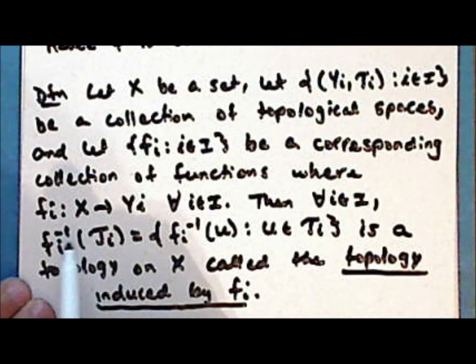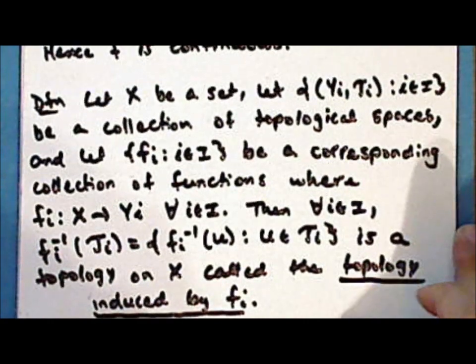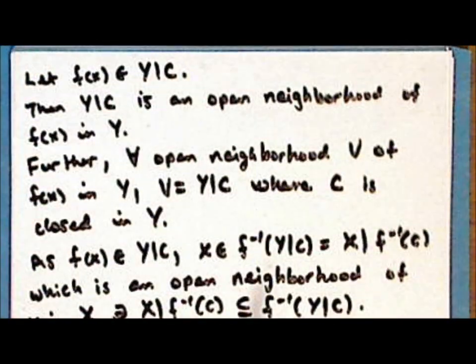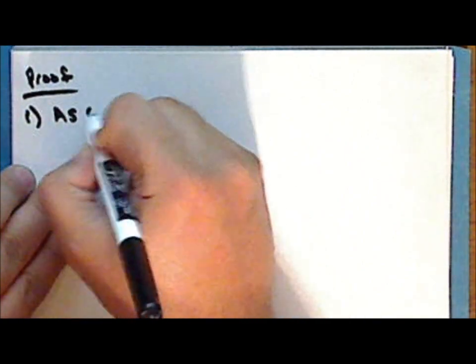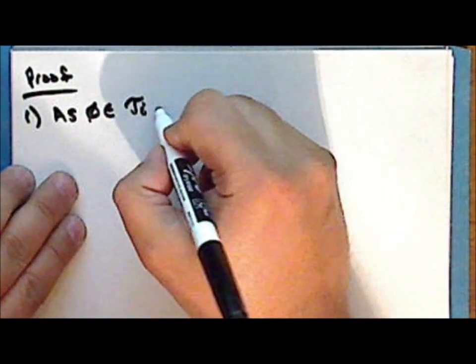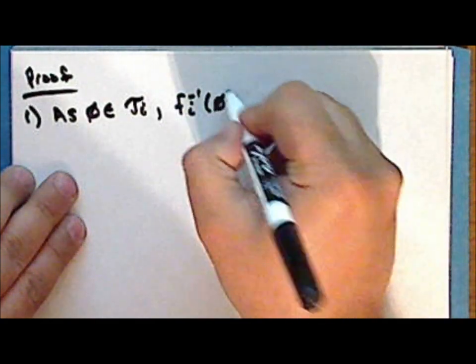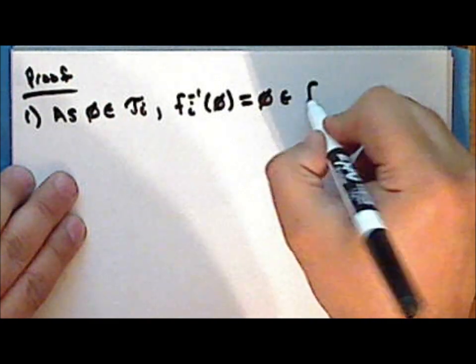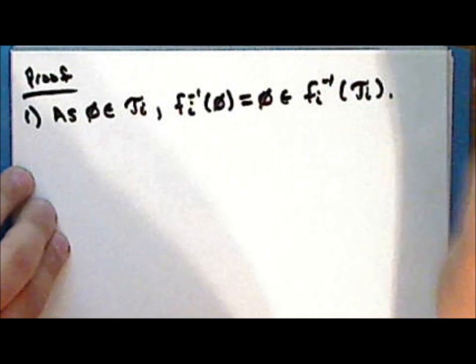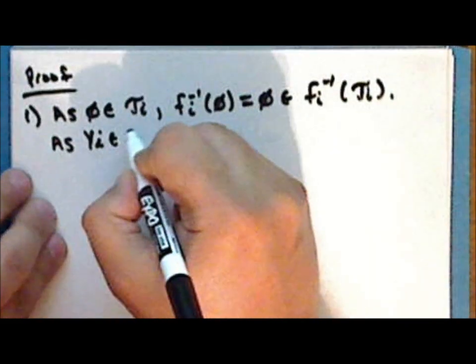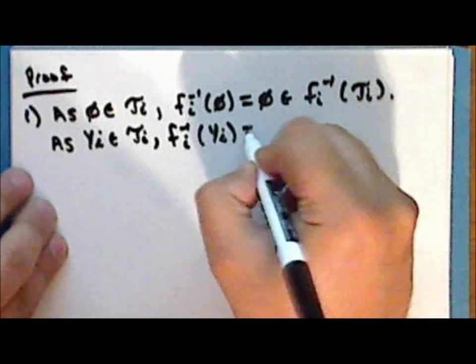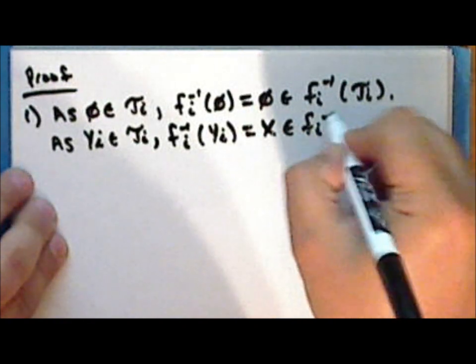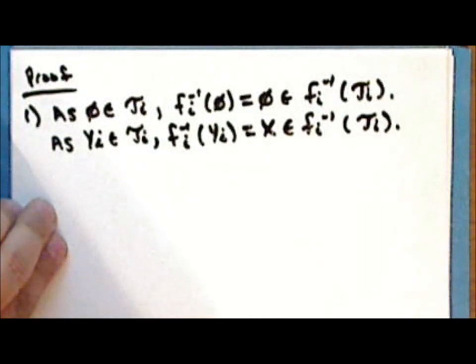We will show that the inverse image under the map f_i of the topology τ_i satisfies the definition for a topology on x. Proof. First condition: as the empty set is in τ_i and the entire set y_i is in τ_i for every index i, their inverse images under f_i — the empty set and the entire set x — are in the inverse image of τ_i under f_i. So the first condition is satisfied.